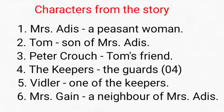Now see the major characters from the story. Mrs. Addis is the central character of this story. She is a peasant woman, small and thin, not more than 42 years old. Tom is the son of Mrs. Addis. Peter Crouch is Tom's friend — he is a working man, an unsuccessful poor man. The keepers means the guards; there are four keepers in this story. Whiddler is one of the keepers. Mrs. Gain is a neighbor of Mrs. Addis. These are the major characters in this story.